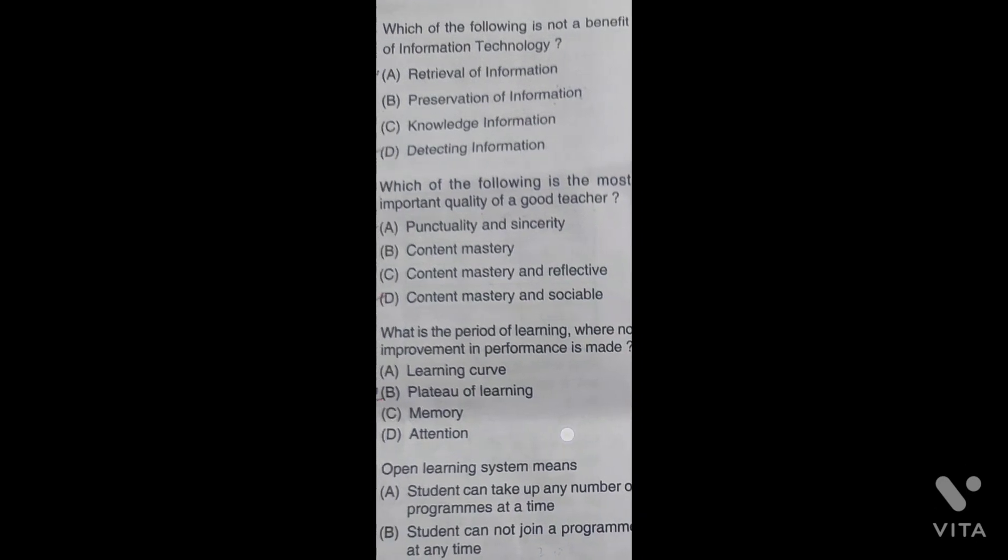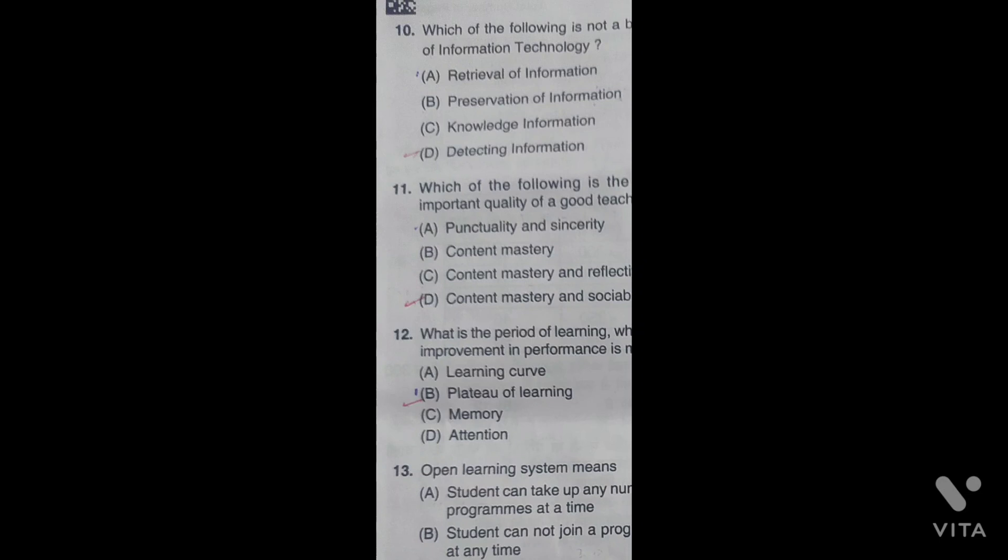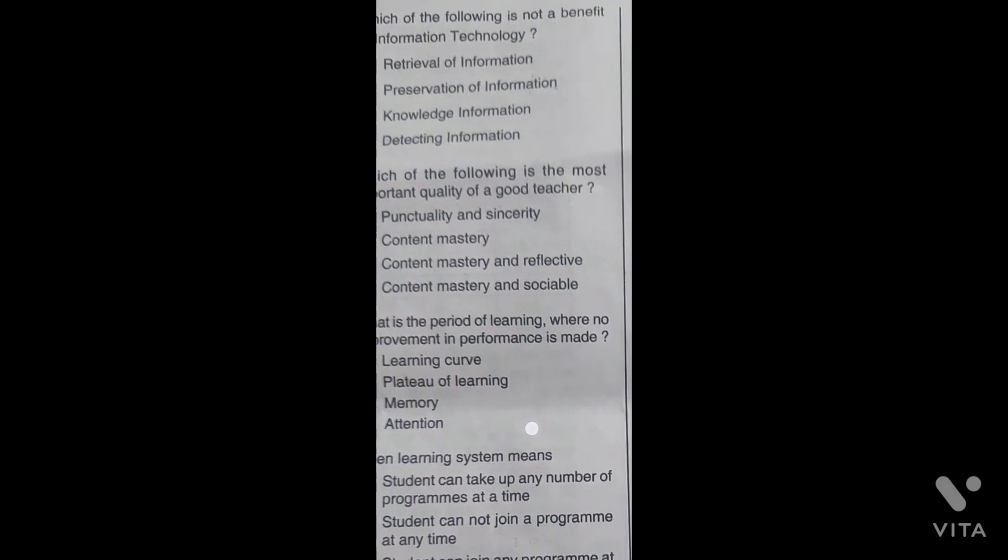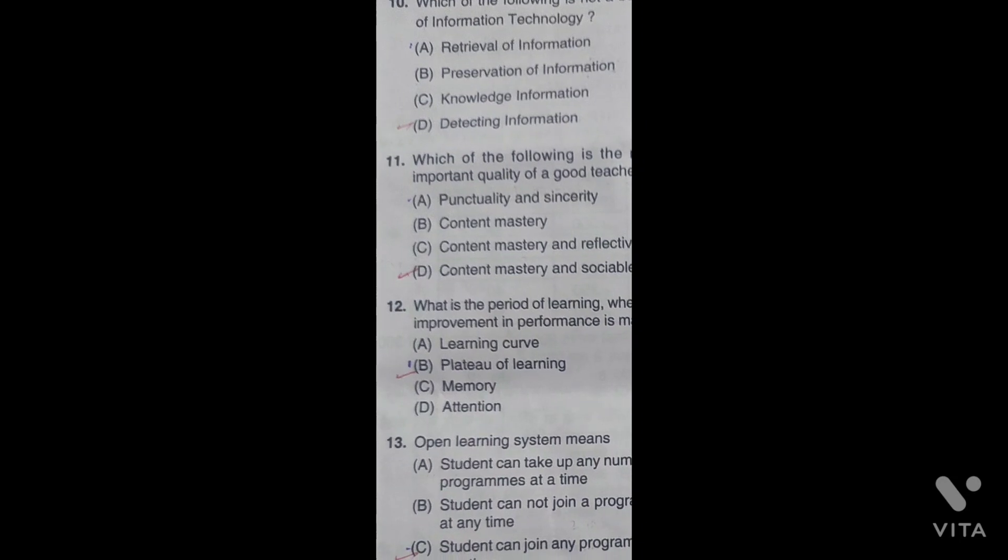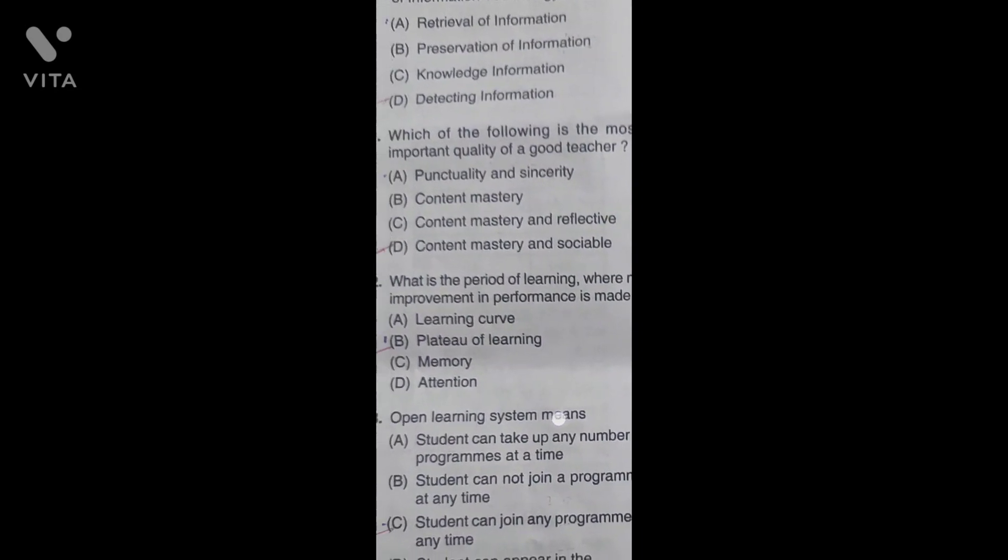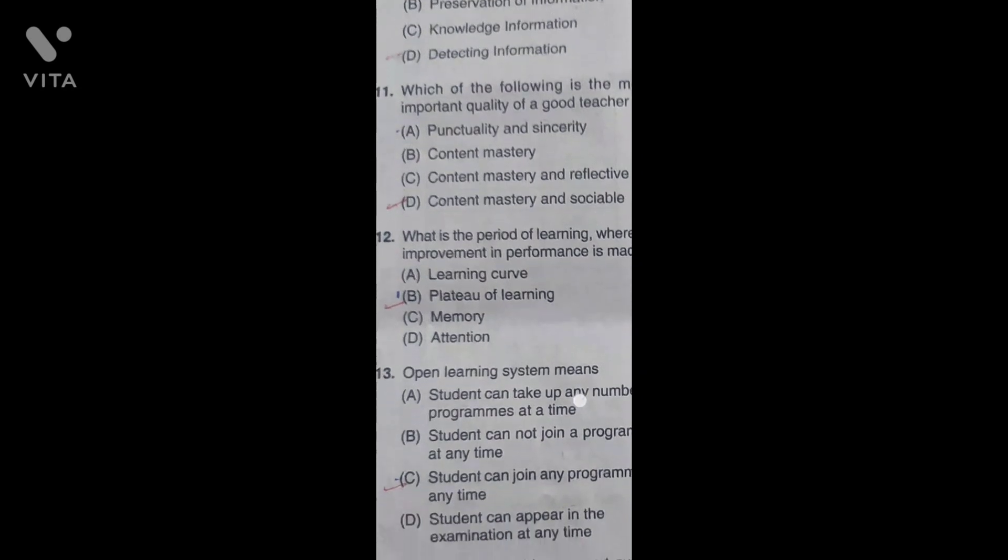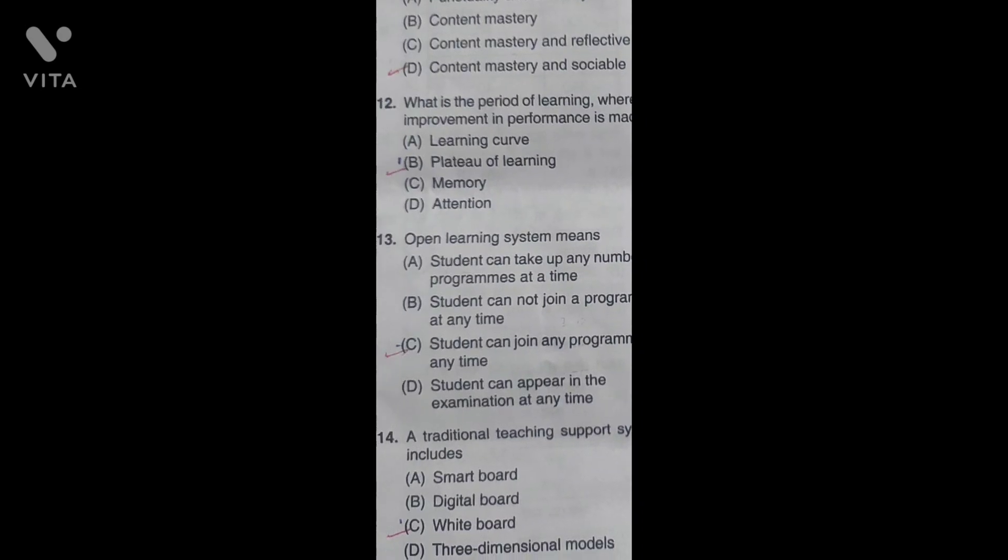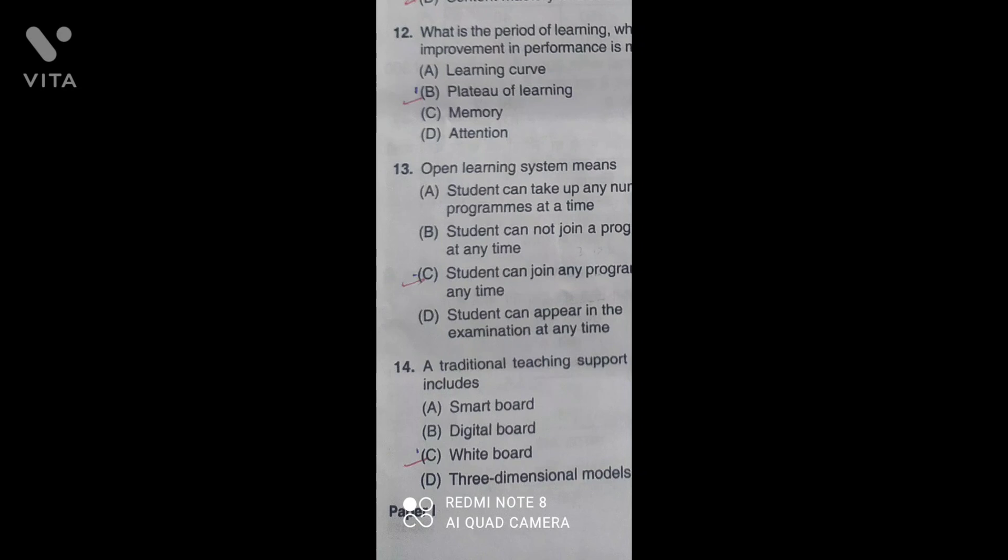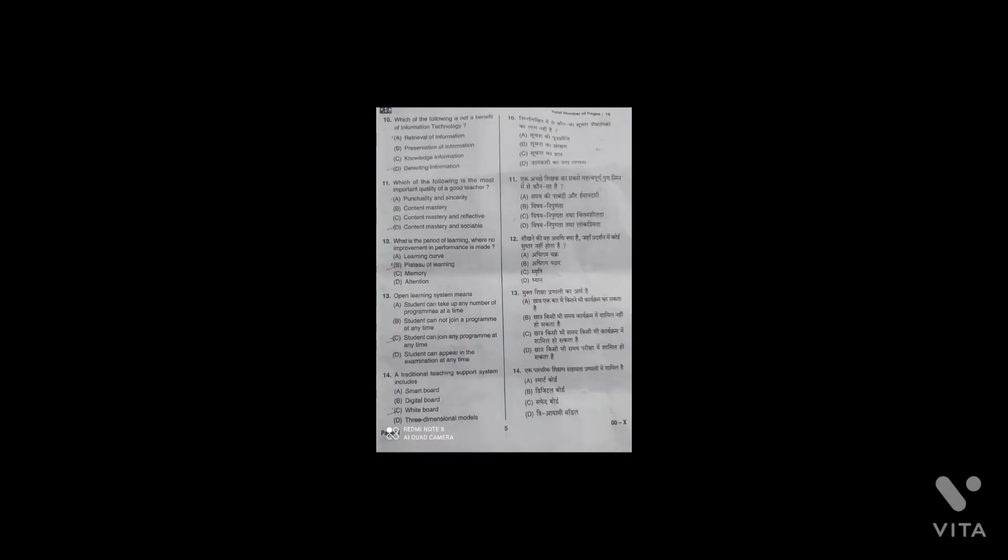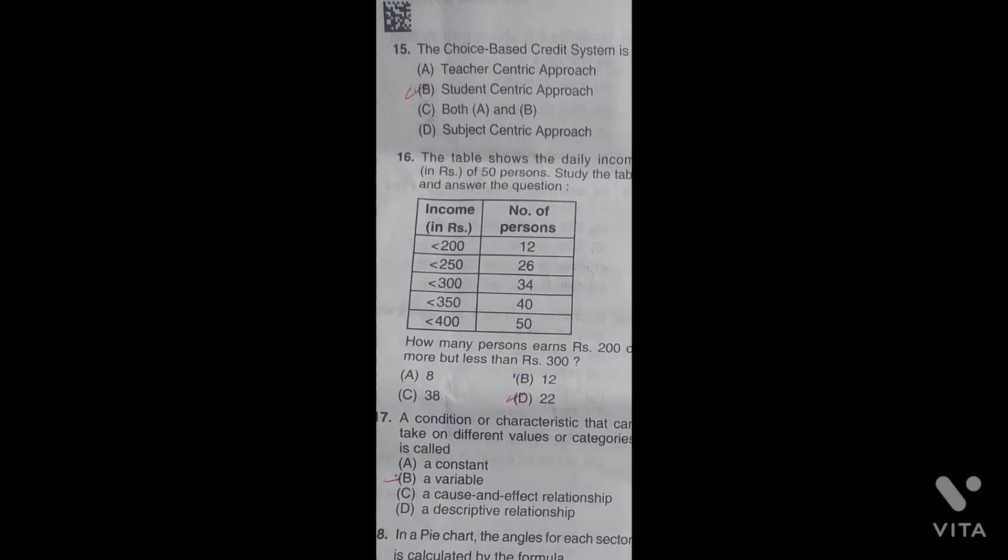Which of the following is the most important quality of a good teacher? The period of learning where no improvement in performance is made is the plateau of learning. Open learning system means students can join any program at any time. A trade channel teaching support system includes whiteboard. The choice-based system is student-centric approach.